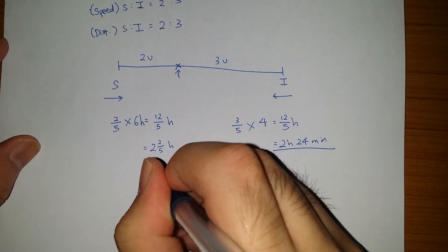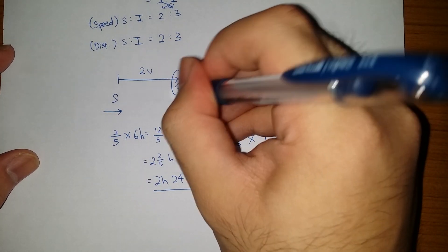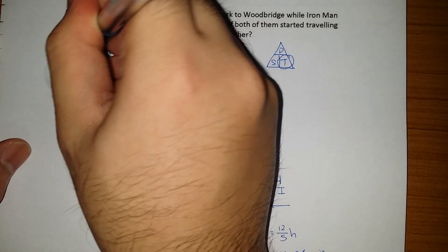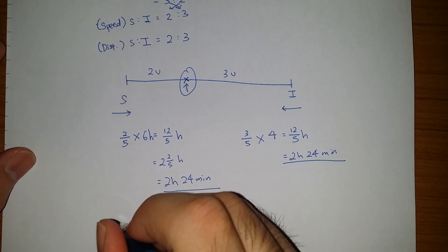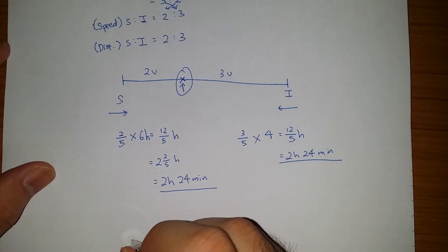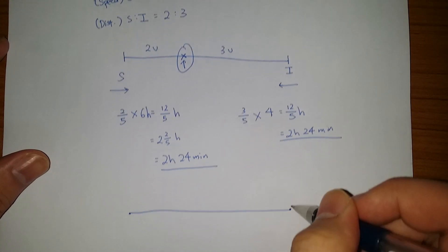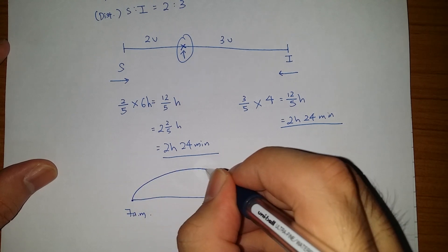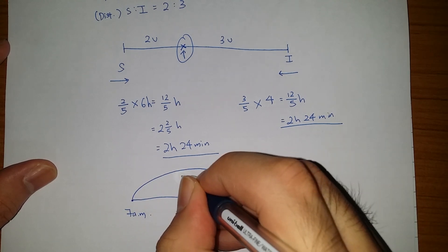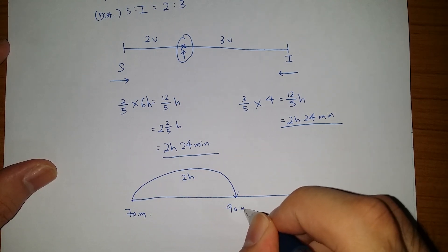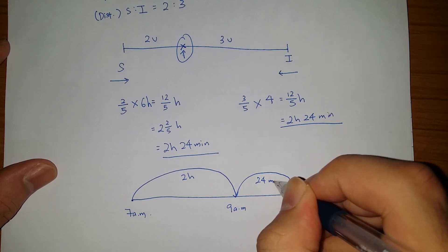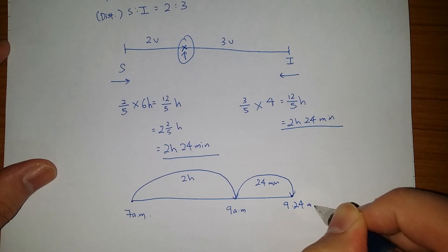Hence, we know that this is the exact duration where they meet up at this point. Hence, what time did they start travelling? They started travelling at 7 am. Hence, 2 hours and 24 minutes after 7 am would be... 2 hours would be 9 am. And another 24 minutes. We get 9:24 am.